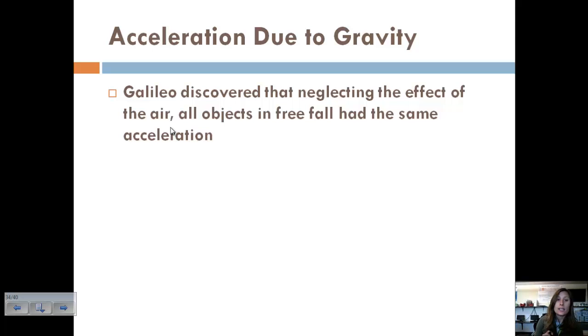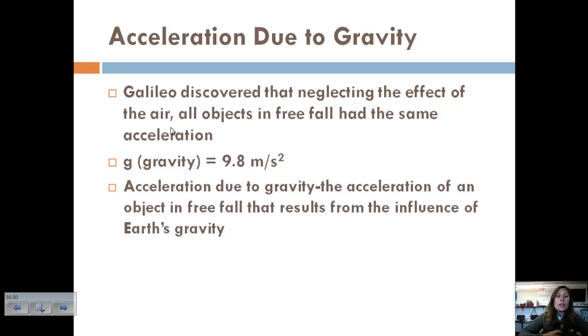Well, Galileo discovered that neglecting the effect of the air, which would be air resistance, all objects in free fall have the same acceleration. And so this acceleration is denoted as gravity, which is 9.8 meters per second squared. So this is the acceleration due to gravity. And it's the acceleration of an object in free fall that basically results from just Earth's gravity. And so that's why everything falls at the same rate in free fall.